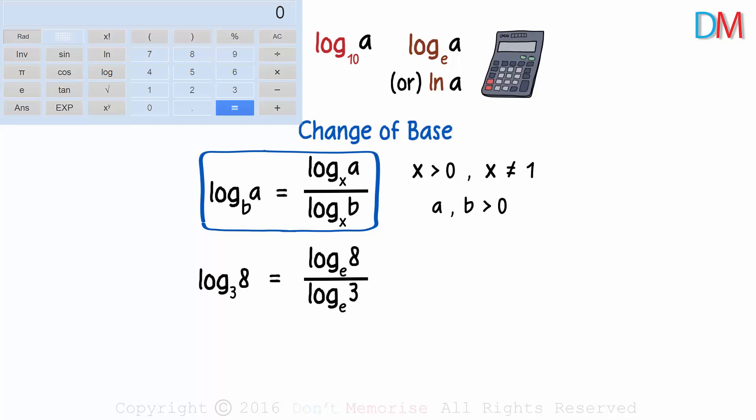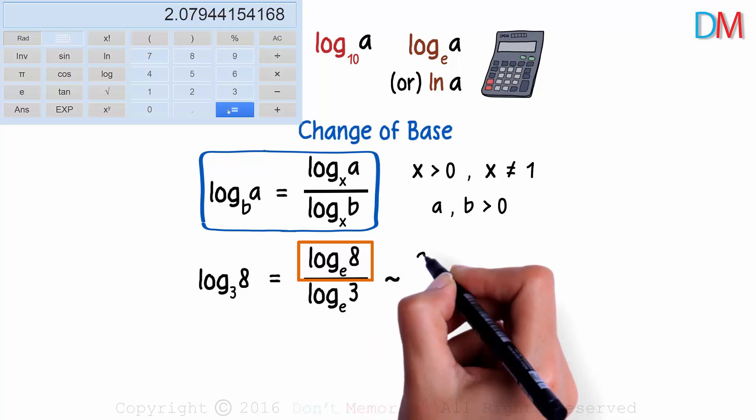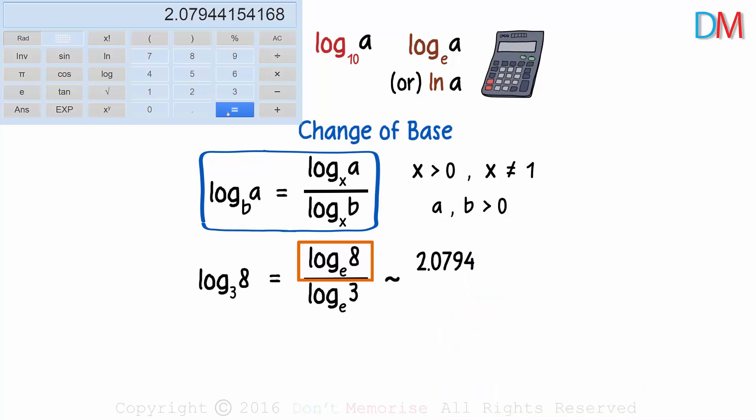Here is the scientific calculator. We can see that we are given the natural log and the log to the base 10 buttons. We are interested in the natural log here. The numerator is the natural log of 8. The natural log of 8 approximately gives us 2.0794. So we write 2.0794 in the numerator.